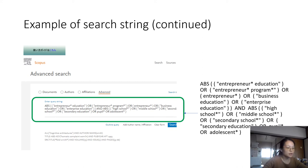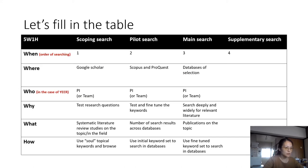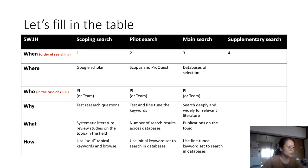You go to the database, input the full search string into the search field, and click search to get your results. We can now fill in the column under main search. It comes after pilot search and is the major search part of your systematic literature review. You conduct this across several databases, relying on one person or a team with divided tasks. You need to search deeply and widely for relevant literature using your fine-tuned keyword set in the selected databases.